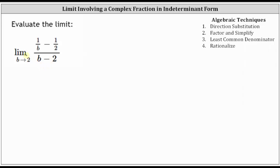We're asked to evaluate the limit of the complex fraction as b approaches two. Notice that if we try to perform direct substitution, we have 1/2 minus 1/2, which is zero in the numerator, and two minus two, which is also zero in the denominator. This gives us the indeterminate form of zero divided by zero, which indicates we cannot determine the limit by direct substitution — but that does not mean the limit does not exist.